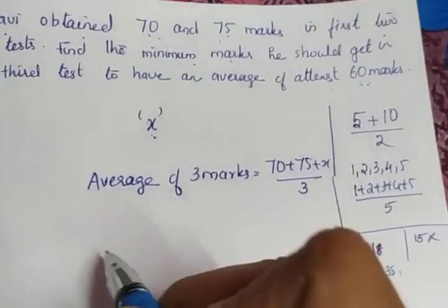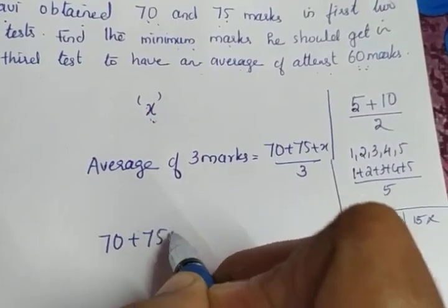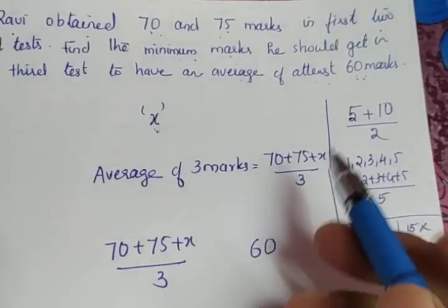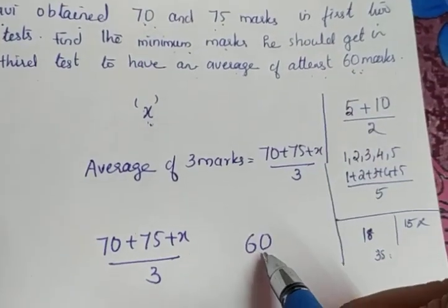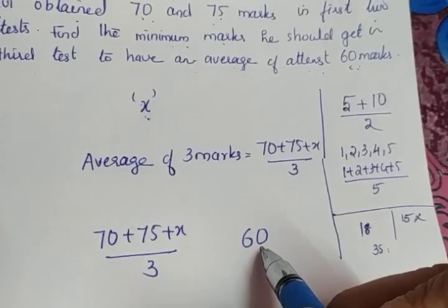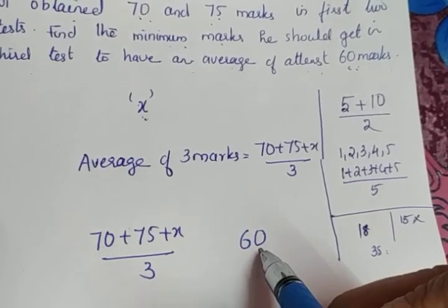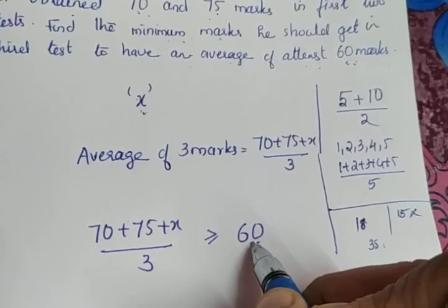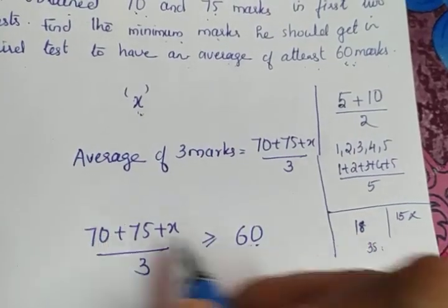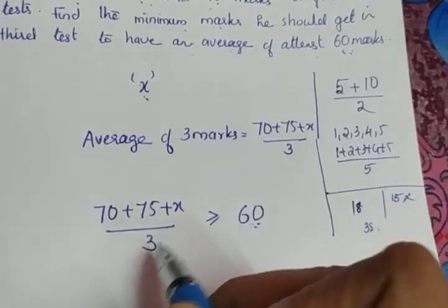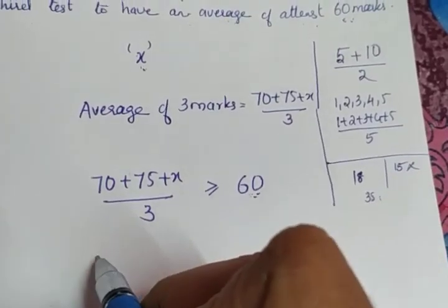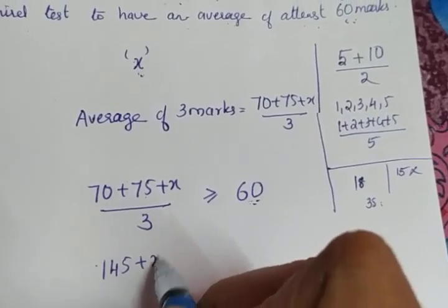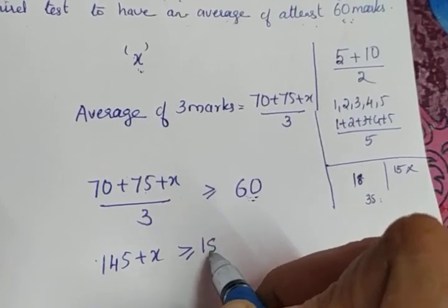So which inequality do we use? We have to put the average (70 + 75 + x) / 3 as at least 60, meaning greater than or equal to 60. The minimum mark is 60 and the average can take a value greater than 60. Cross-multiplying gives us: 70 + 75 + x ≥ 60 × 3, so 145 + x ≥ 180.